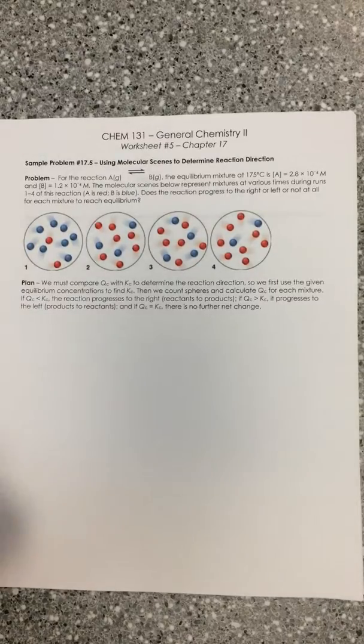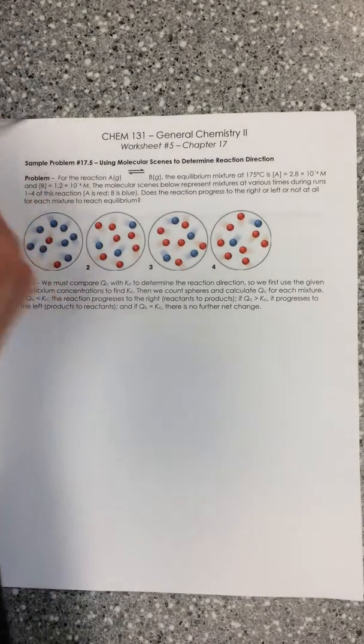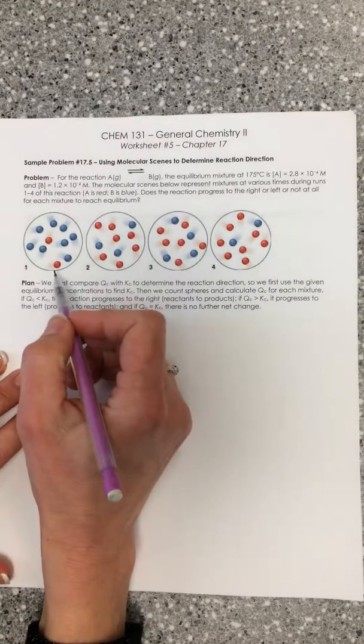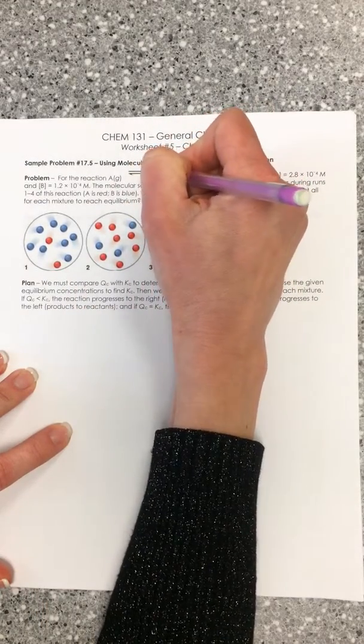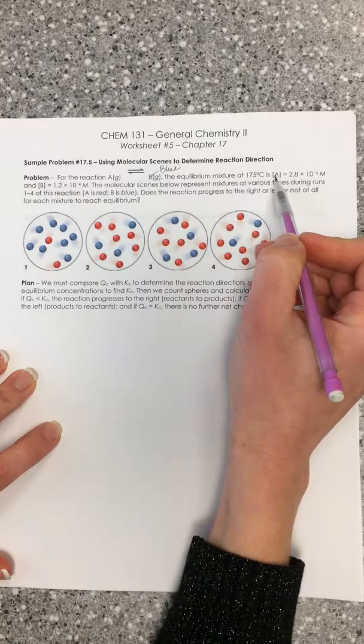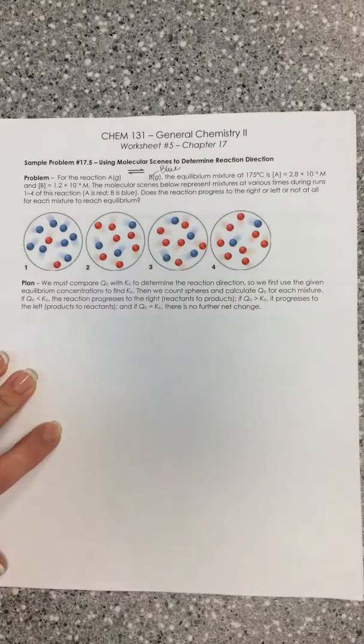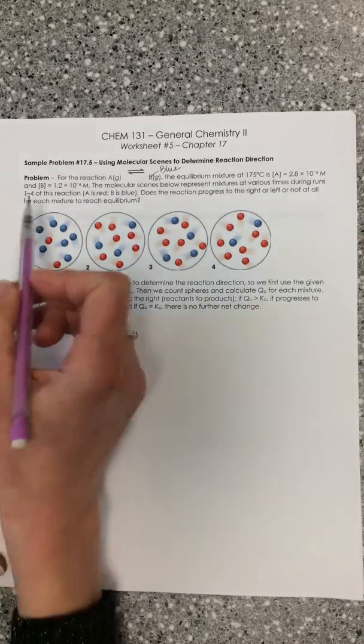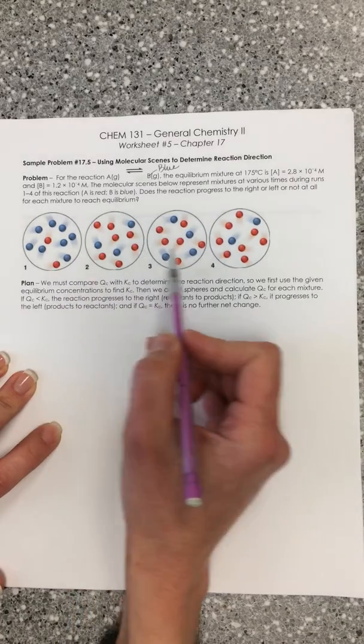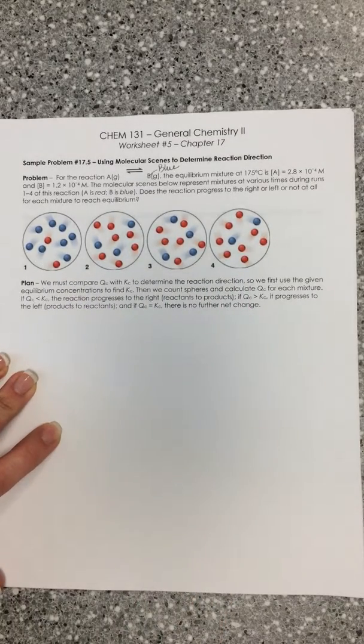So this first problem is a molecular scene problem that's going to allow us to think about comparing Q versus K. So for the reaction A being converted to B, and I'm going to define B as the blue spheres, the equilibrium mixture at 175 degrees C is going to be a concentration of the red spheres as 2.8 times 10 to the minus 4th molar, and a concentration of the blue spheres as 1.2 times 10 to the minus 4th molar. The molecular scenes that are shown below represent mixtures at various times during runs 1 through 4 of this reaction. Does the reaction progress to the right or the left or not at all for each mixture to reach equilibrium?